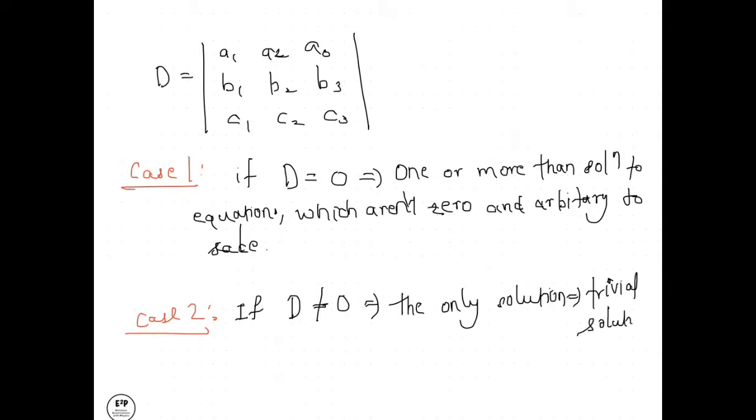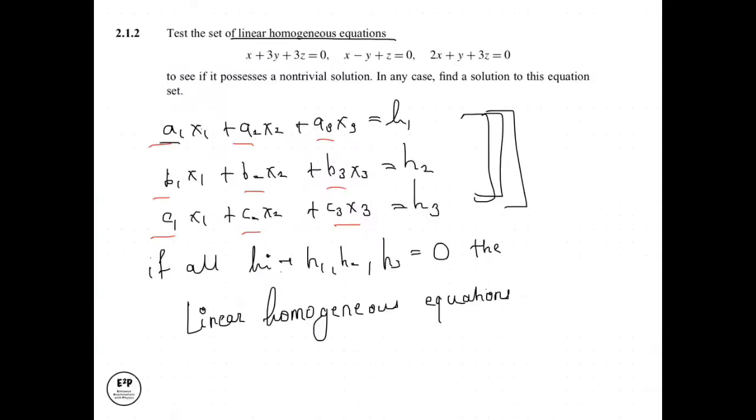Now you guys might be having difficulty with the terminology of trivial solution. So the trivial solution is something in which all the values of the variables—over here we have variables x1, x2, and x3—these variables equal 0.